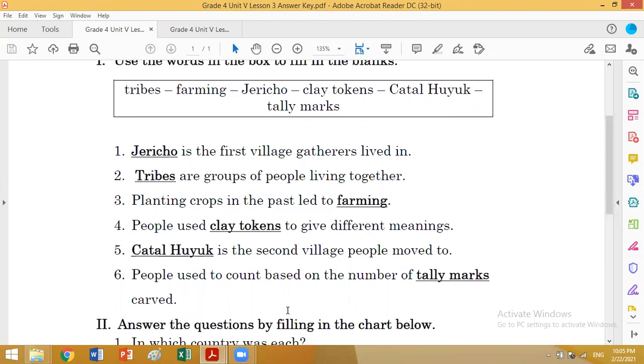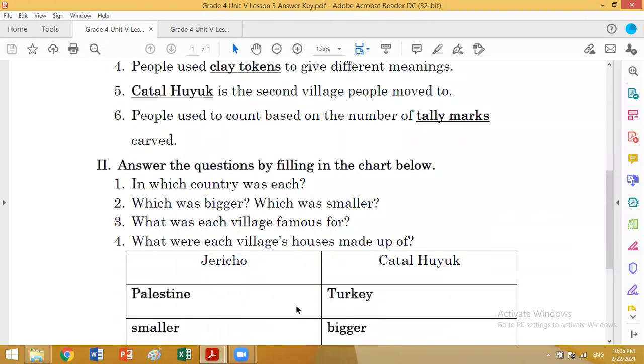Four: People used clay tokens to give different meanings. Five: Catal Huyuk is the second village people moved to. Six: People used to count based on a number of tally marks carved. Exercise two: answer the question by filling in the chart below. In which country was each?